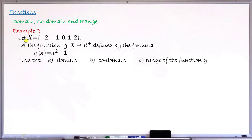Example number 2: let X be a set containing the elements minus 2, minus 1, 0, 1, and 2. And let g be a function that takes each and every element in set X and assigns it to a single element in the set of positive real numbers R⁺. This function g is defined by the formula g(x) = x² + 1. The question asks to find: (a) the domain of function g, (b) the codomain of function g, and (c) the range of function g.